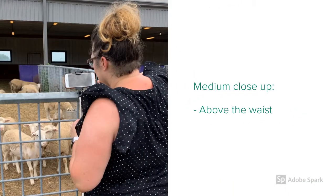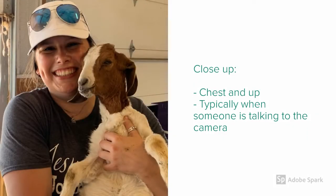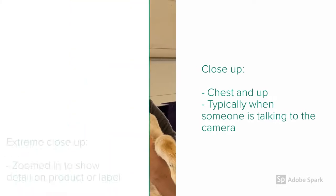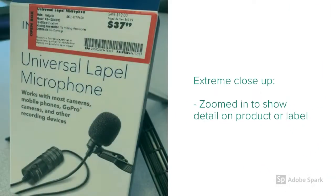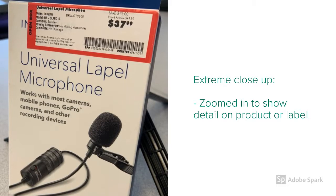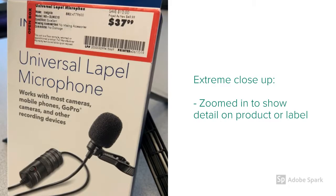A medium close-up is typically above the waist. A close-up shot includes the chest and up and is typically when someone is talking to the camera. An extreme close-up zooms in to show detail on a product label, like here where we wanted to show you the price or maybe some unique feature that you need to investigate closer.